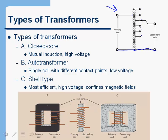The third design is called the shell type, and it works especially well for high voltage — it's the most efficient kind. It has a slightly different orientation for the iron, and like the auto transformer, it uses a single coil of wire.